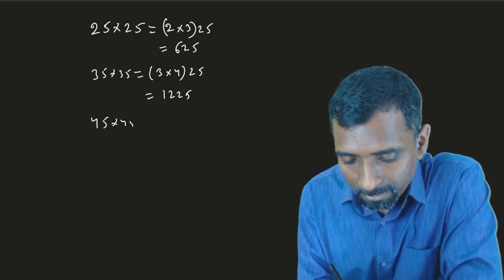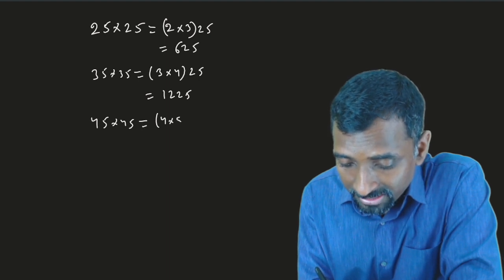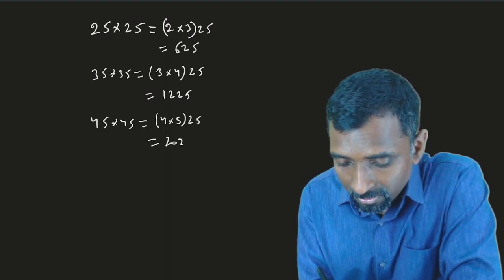If I say 45 multiply 45, it will be 4 multiply the next digit 5, then 25. It is 2025.